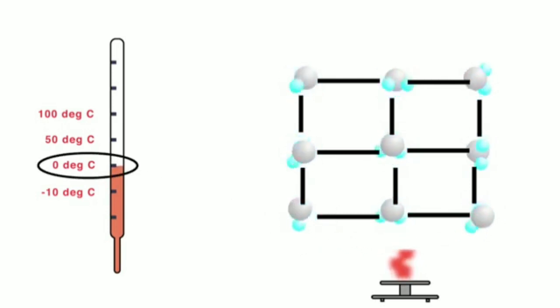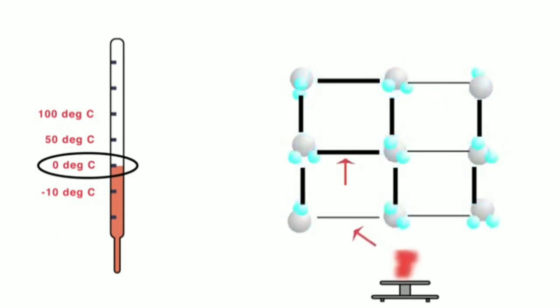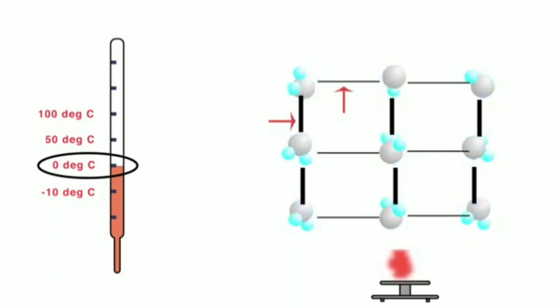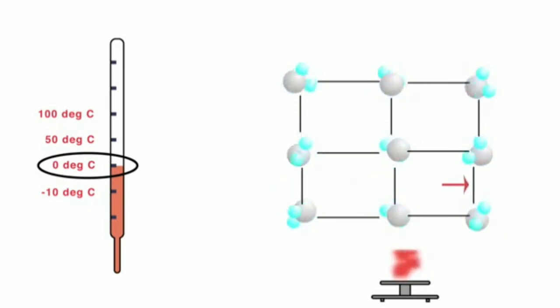Once the melting point of ice is reached, the heat energy is now utilized to weaken the inter-particle forces one after another, leaving the particles free to move. This is the conversion of matter into liquid state. Note that the kinetic energy is not increasing and the temperature does not rise.